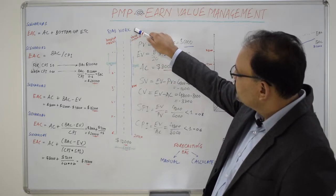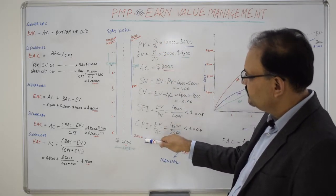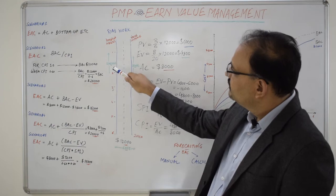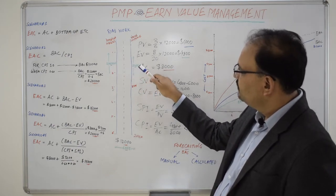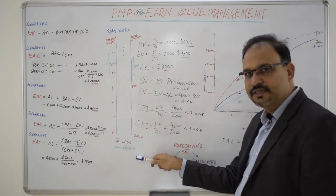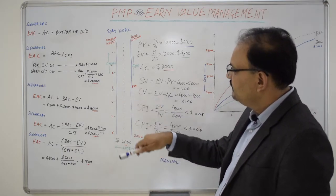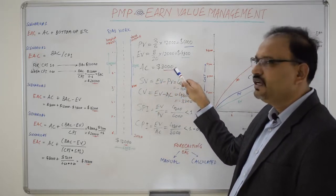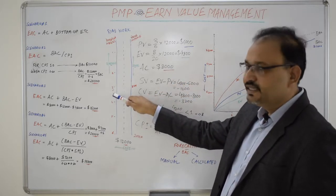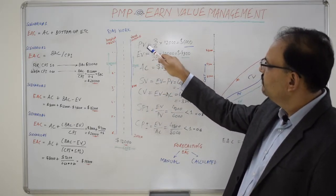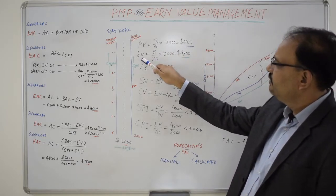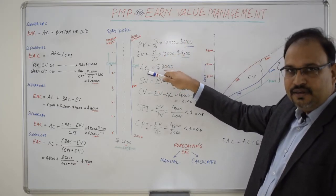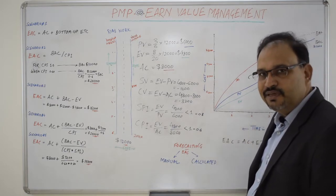Those who haven't watched my previous session, here's a quick recap of the example. This is a road work project which is planned to complete a 20-kilometer stretch within six weeks of time with a budget of $12,000. So we have a schedule baseline, scope baseline, and cost baseline available for the project. At the end of three weeks, the project realizes that it has completed only eight kilometers of the road with actual money spent of $8,000. Based on the data available, we calculate the Planned Value, which comes out to be $6,000, and Earned Value comes out to be $4,800.